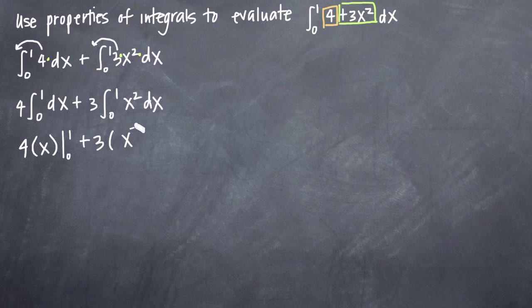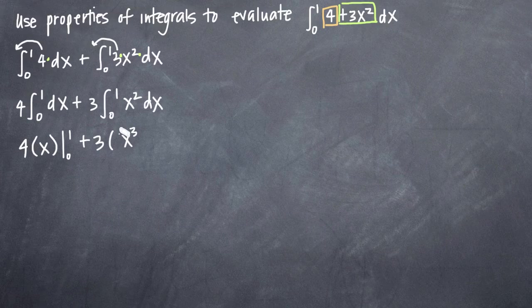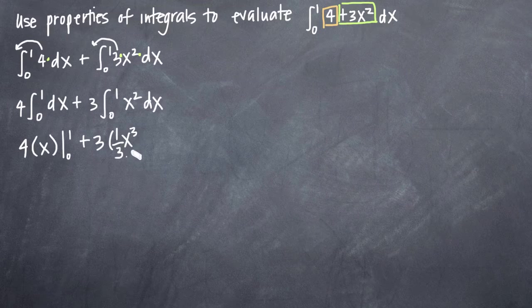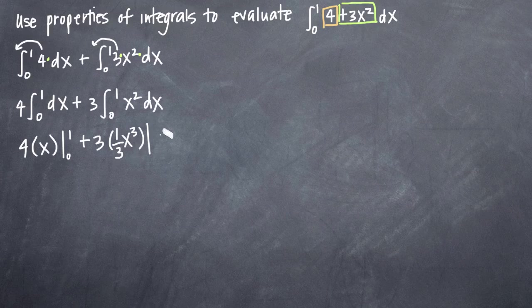And then we divide the coefficient, which right now happens to be 1, by the new exponent, 3. So we get 1 third like that and we're going to be evaluating 1 third x cubed on the range 0 to 1.